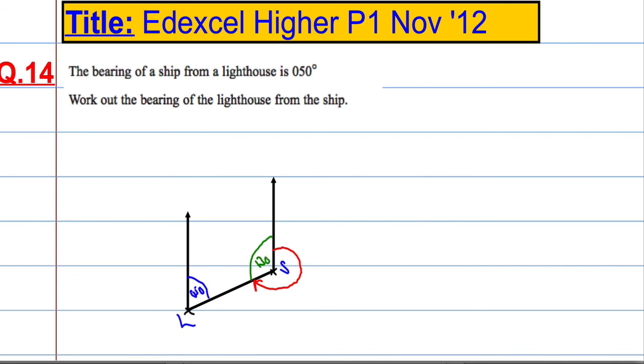If that's 130 degrees, that means this red angle must be 360 take away 130. So 360 take away 130, and that's going to give you 230 degrees.